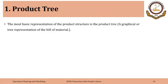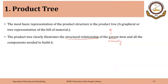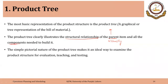First we will discuss product tree. The most basic representation of the product structure is the product tree. It's a graphical or tree representation of the bill of material. Product tree clearly illustrates the structural relationship of the parent item and all the components needed to build it, showing the relationship of the parent — the assembly or sub-assembly — and all the components needed.